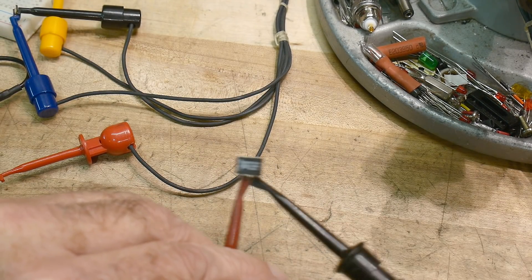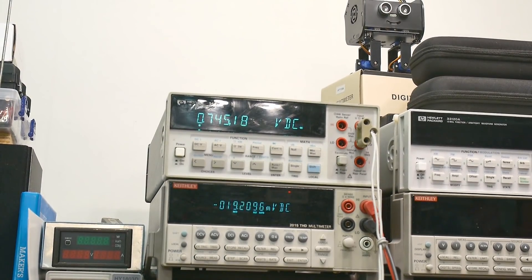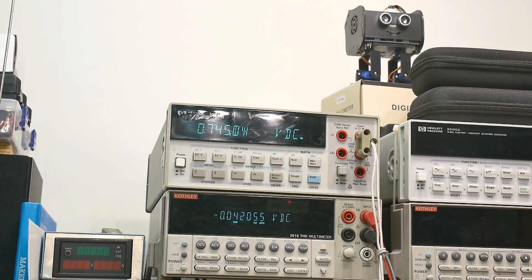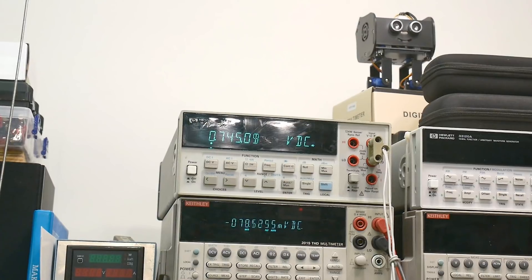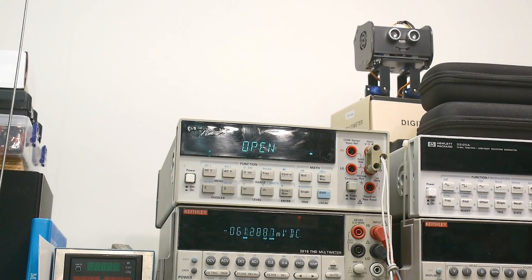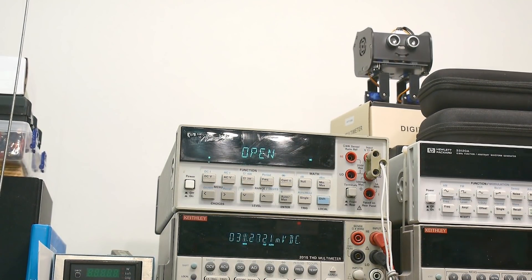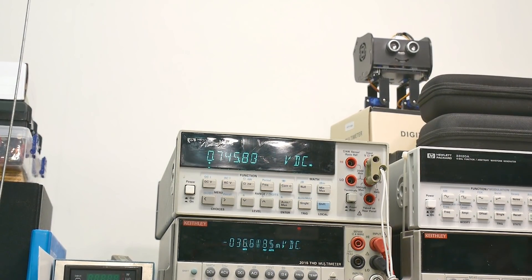We'll go over here and over here and we'll take a look at our DVM up there, and it says 0.745 volts. Now I will measure it in the opposite direction, and in the opposite direction I get 0.745.